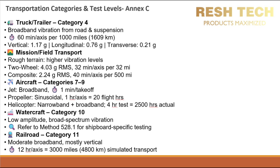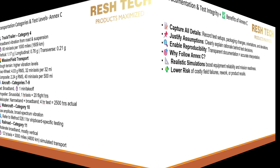Watercraft per Category 10: vibrations for ship-stowed equipment are typically low-amplitude broadband spectrum random vibration. Refer to MIL-Standard 810H Method 528.1 for detailed naval guidelines. Railroad Transportation per Category 11 features moderately low-amplitude broadband vibrations primarily in the vertical axis, with test durations of 12 hours per axis representing 4,800 kilometers or 3,000 miles of transport.